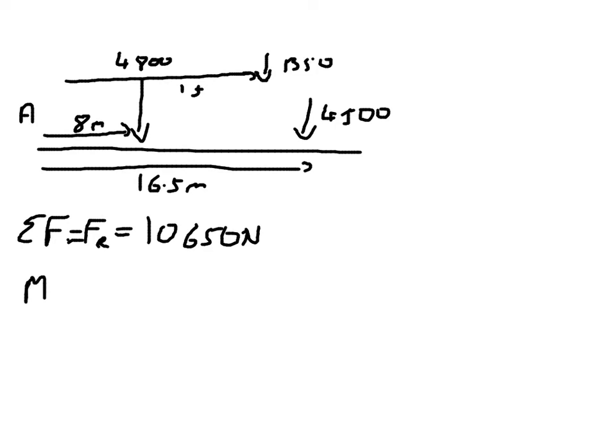My moments about A, the sum of my moments about A, is going to equal 4,800 by 8. That's going to be negative because it's trying to go clockwise.